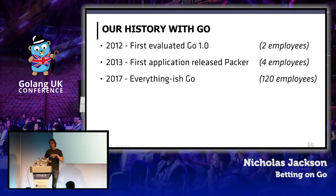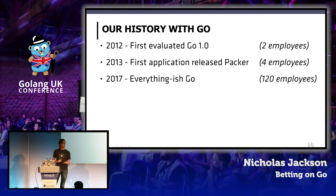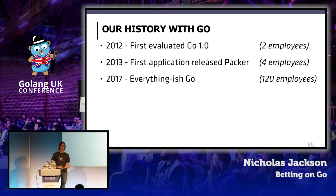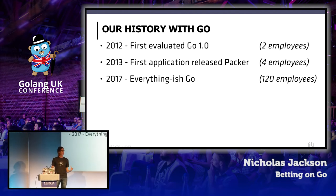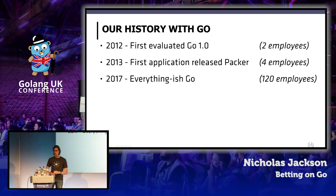When we started work on Packer in 2012, nobody was using Go. But when we released Packer in 2013, just about a month apart, CoreOS came out and Docker released. That gave us great confidence that there were other companies betting on the language who were working in a similar distributed space — that infrastructure space.